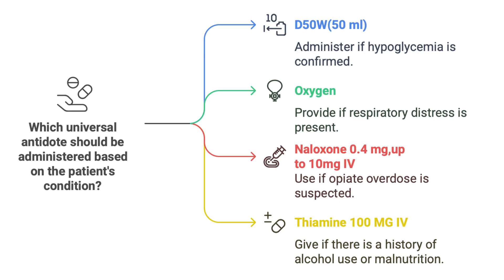Dextrose: hypoglycemia can mimic many neurological conditions including coma, so giving dextrose quickly rules that out and can be life-saving. Oxygen: it's essential for brain function, and any compromise to breathing or circulation leads to hypoxia, so supplemental oxygen helps prevent further brain damage. Naloxone reverses opioid overdoses — opioids like heroin, fentanyl, and prescription painkillers suppress the respiratory system, causing decreased consciousness and potentially death, and naloxone quickly restores breathing and consciousness.